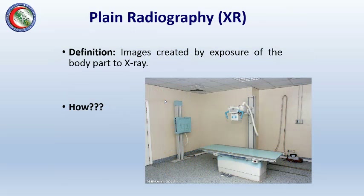If we talk about plain X-ray, X-rays are images of different body parts created by exposure to X-ray. We can see here a typical X-ray machine with this area as the source of the X-ray, a table where the patient can lie down, and a drawer where we place the film or detector to capture the image.